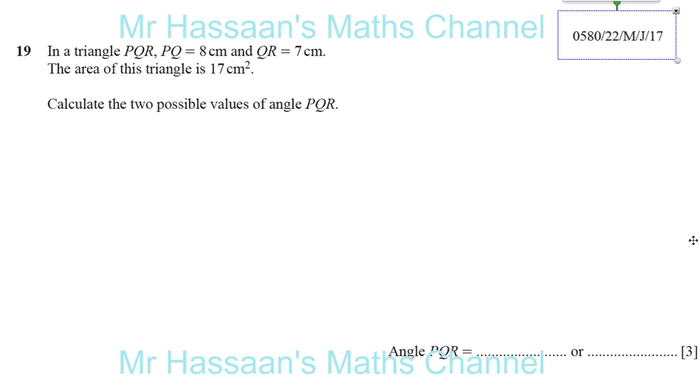Now we have question number 19 from May/June 2017, paper 2, variant 2. This is in a triangle PQR. PQ is equal to 8 centimeters and QR is equal to 7 centimeters. The area of this triangle is 17 centimeters squared. Calculate the two possible values of angle PQR.